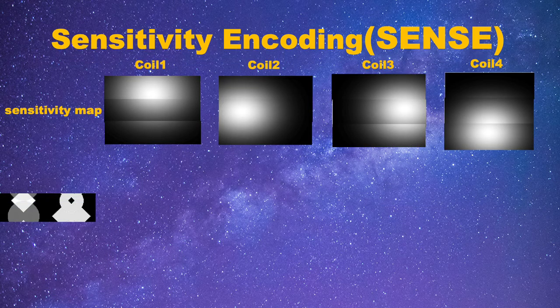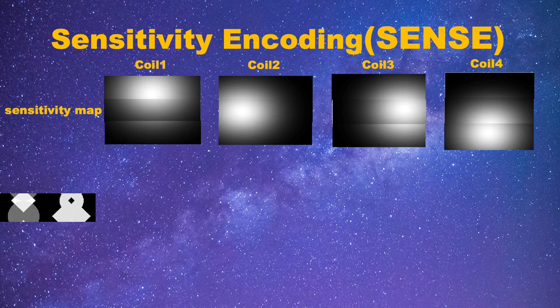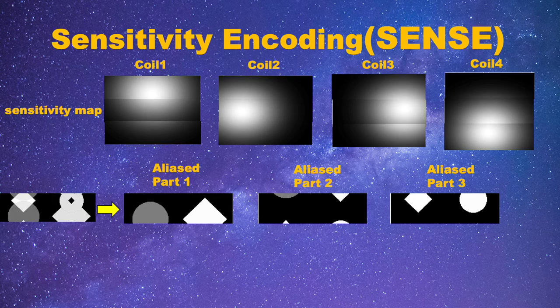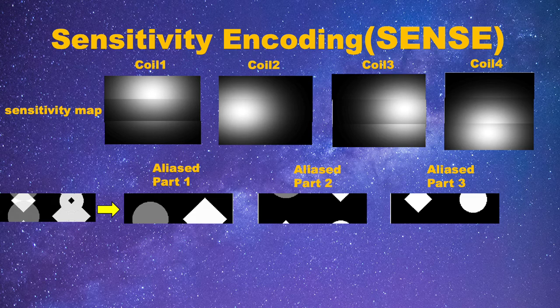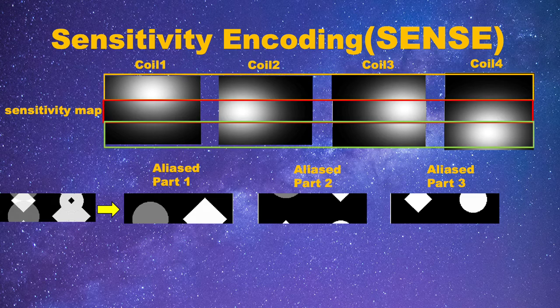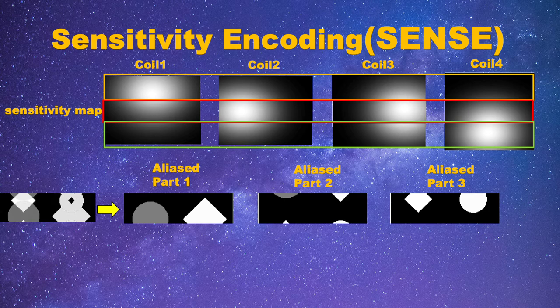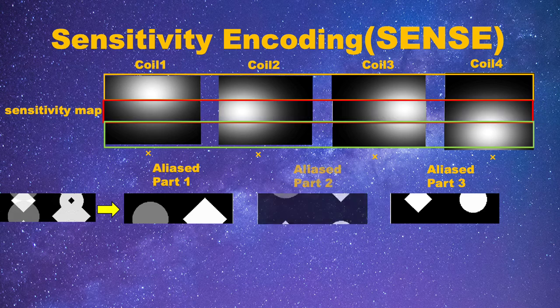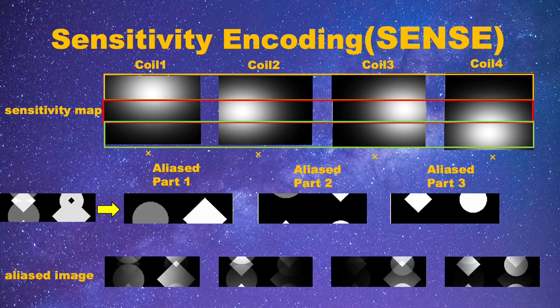Now, let's consider how these aliased images are formed. Although they look aliased, they are actually combined of three parts. These three parts lay down each other and form these aliased images. Here, we can also separate a sensitivity map into three parts accordingly. The aliased images are then formed by two steps. First, multiply each part of the sensitivity map and the corresponding part of the image, and then add three parts together for each coil.